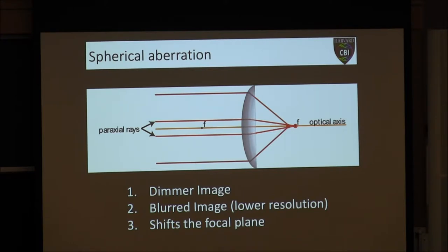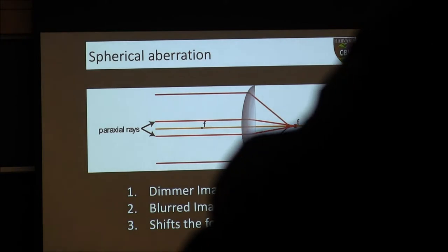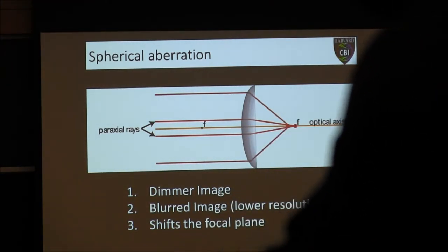I want to talk about five big problems spherical aberration produces in the microscope — starting with three. These are things you've probably heard about, and they apply not just to microscopy but photography and astronomy as well. Because all these rays aren't getting focused to the same point, we get a dimmer image — not all the light reaches the detector. Things get blurred because they're not coming to a sharp focal point. And the third effect is that it actually shifts the focal plane.